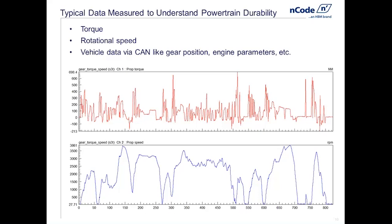We can collect other data at the same time as well — vehicle data from the CAN bus, such as what gear we're in, throttle position, vehicle speed, and other metrics that help us understand what our part is actually doing. For example, with a differential we may care about torque and speed, but also torque split — how much slip we have if we have a limited slip differential, and how much friction is being passed from one side of the clutch to the other.